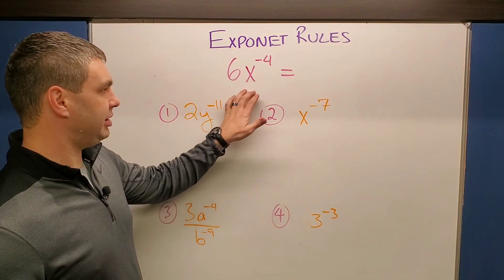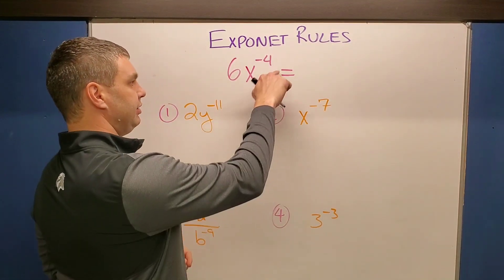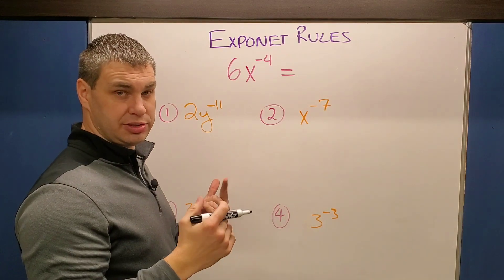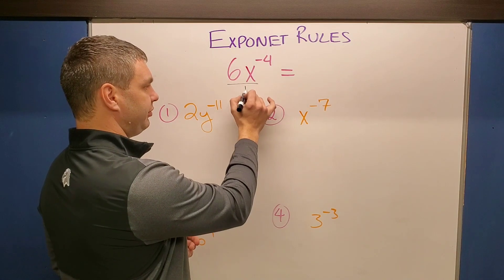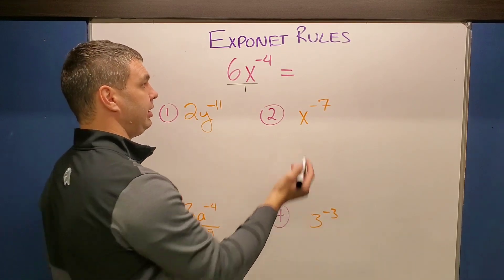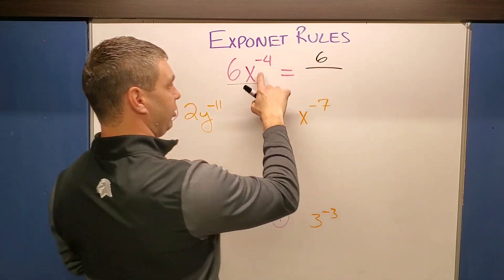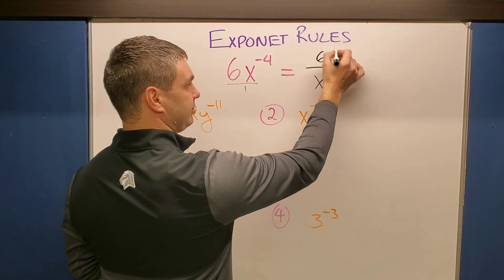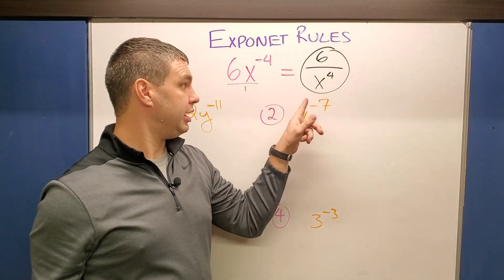Here are a couple more exponent rules dealing with negative exponents. When you have a negative exponent like x to the negative four, it's going to flip to the other side of the fraction. You can always make anything over one, so the term moves to the denominator and becomes positive. The six is not being affected by the negative four, so it stays on top. So six times x to the negative four becomes six over x to the fourth power.